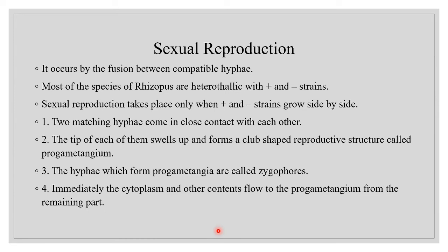Sexual reproduction takes place at the end of the vegetative period. Most species are heterothalic — their thalli are morphologically similar but physiologically different. In homothalic species the thalli are both morphologically and physiologically similar. We will study sexual reproduction in heterothalic species, which occurs when different strains — plus and minus strains — grow side by side within the substrate.